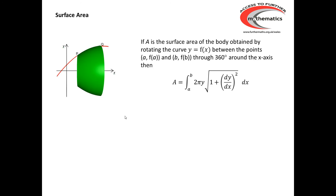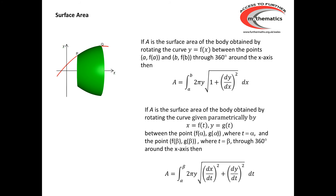For a curve y = f(x) which is rotated around the x-axis by 360 degrees, the resulting body has a surface area given by the integral of 2πy times the square root of 1 plus (dy/dx) squared. If the curve equation is given parametrically, then the surface area becomes the integral of 2πy times the square root of (dx/dt) squared plus (dy/dt) squared.